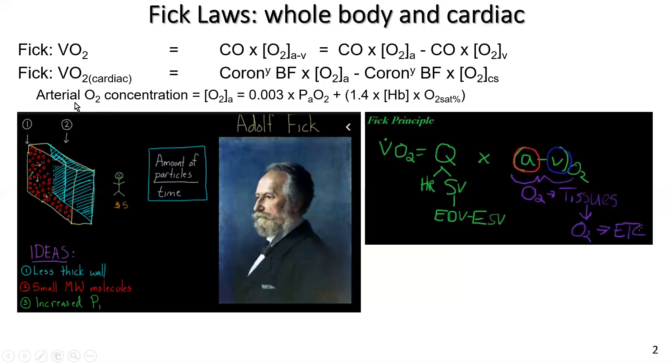And just finally, before I leave the formula, arterial oxygen concentration is obviously very important in this scenario. And that's equivalent to a tiny percentage 0.003 of the freely dissolved oxygen, which is PaO2, plus 1.4 times the hemoglobin concentration times O2 saturation.